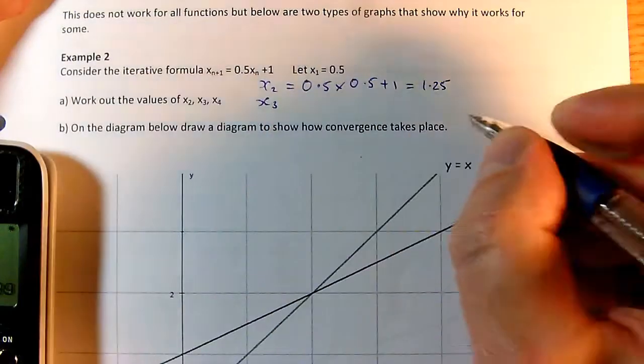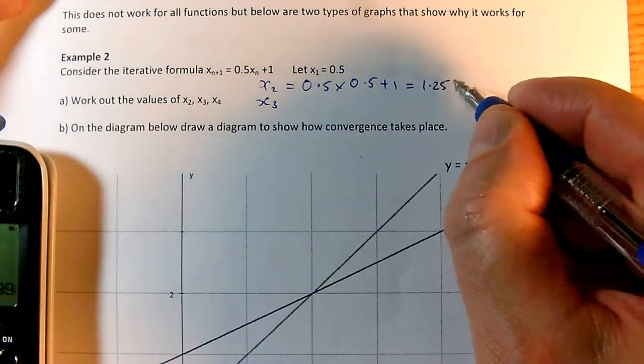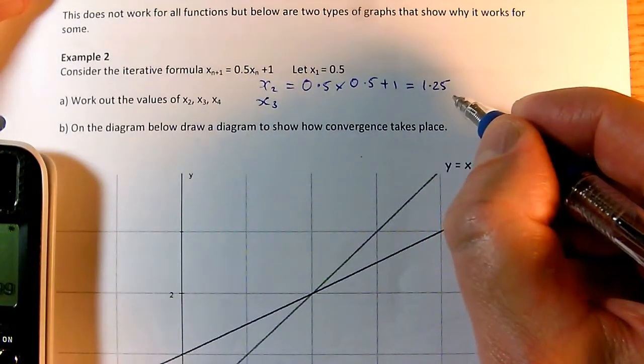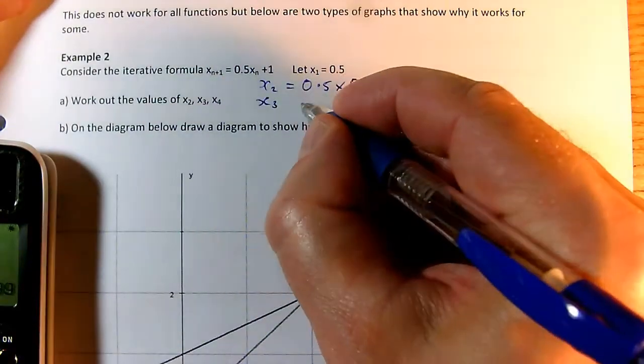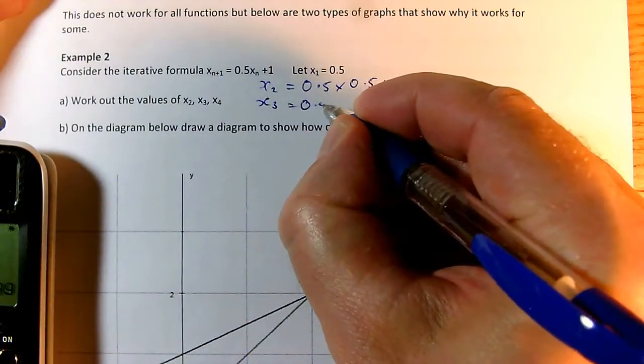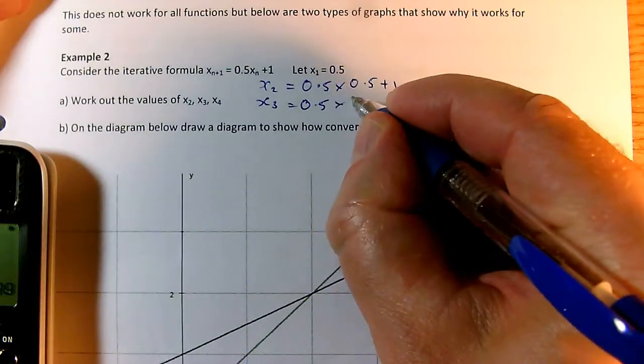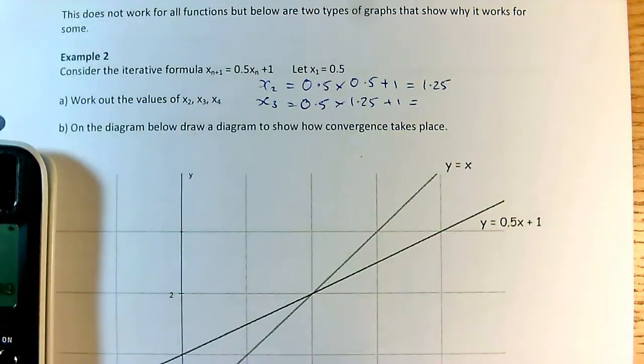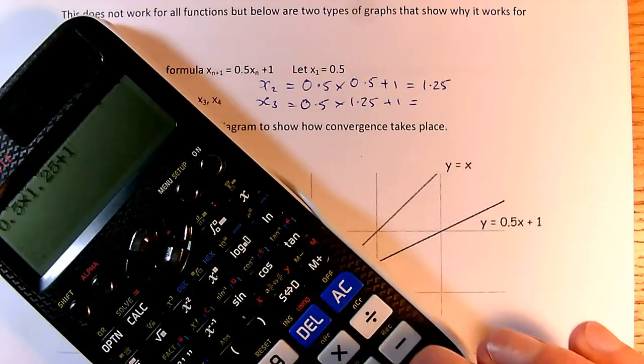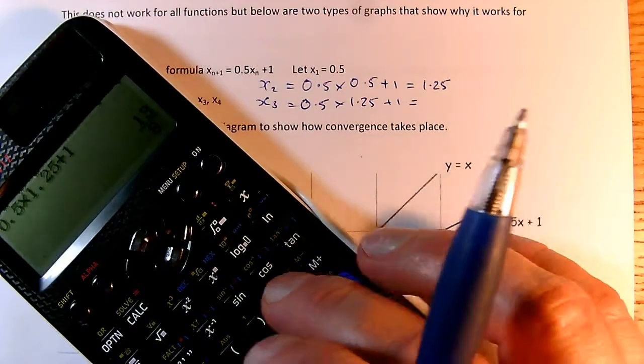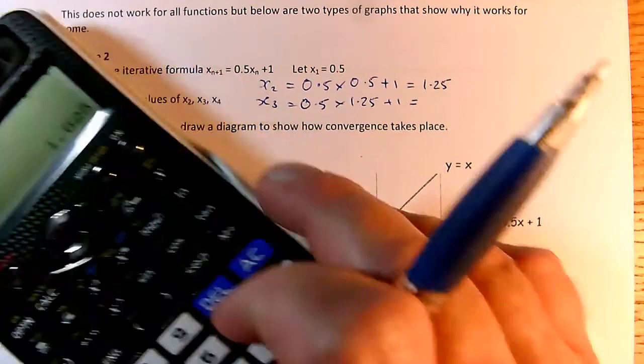Then to work out x3, now I have to recycle this 1.25. So the first bit says 0.5 times, and then the previous answer times equals, and the answer to that is, I'll do it on the calculator. Here we go, and the answer is 1.625.